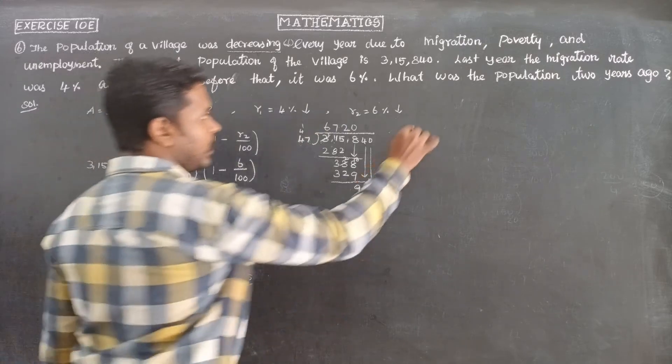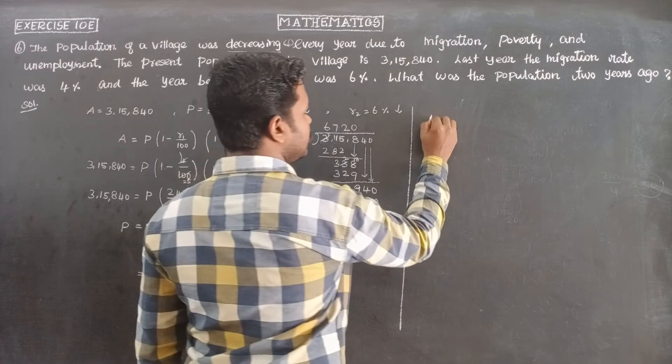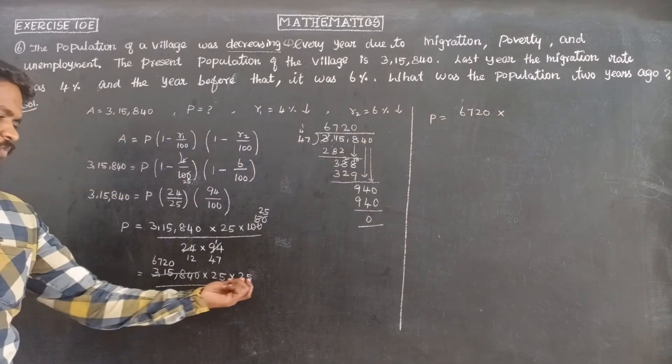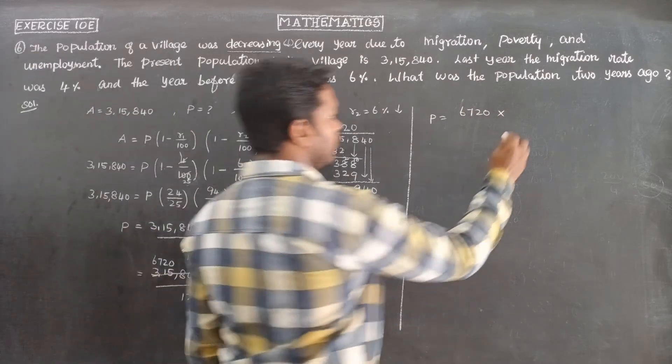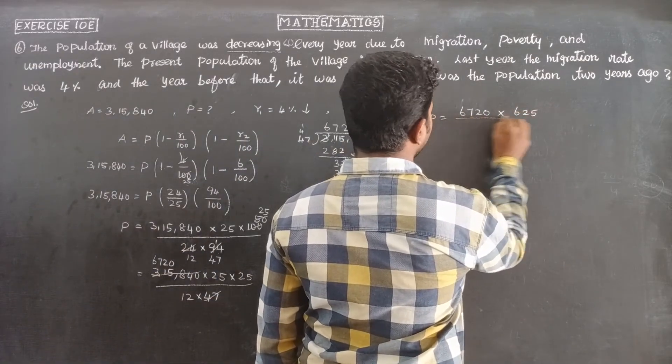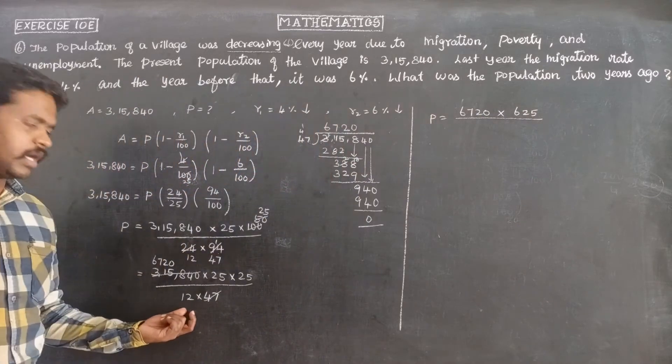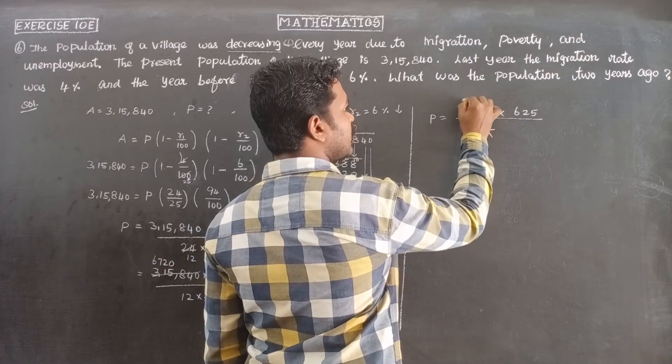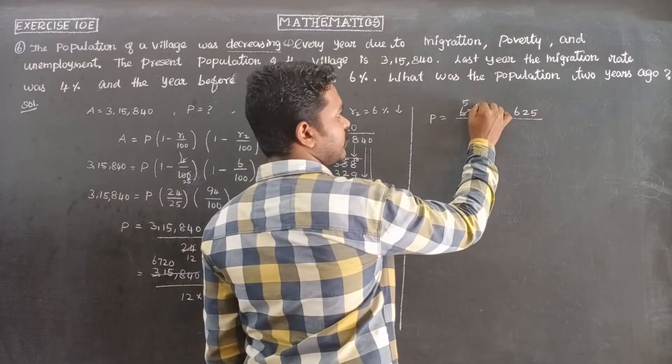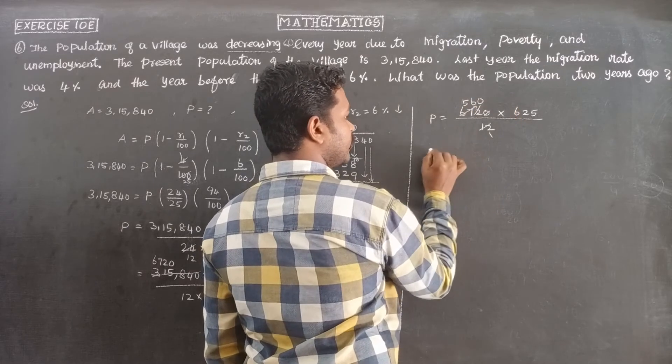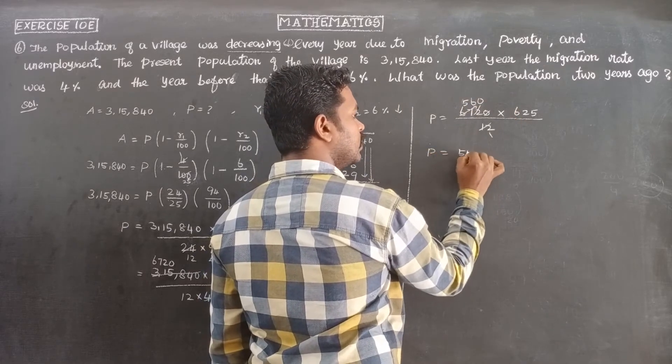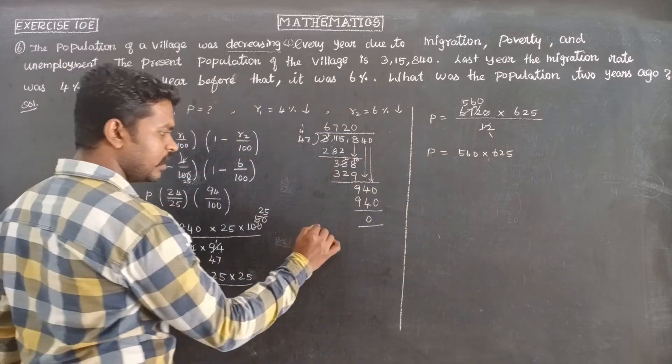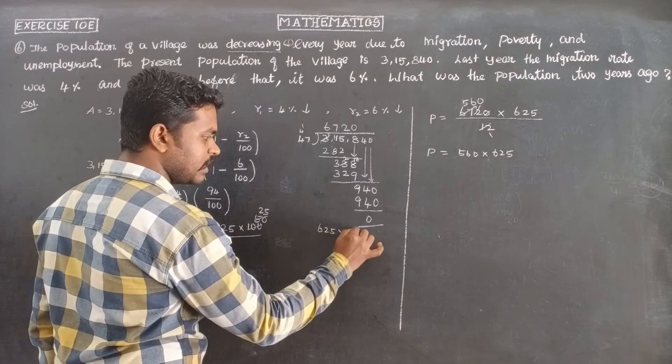So 6,720 again: P equals 6,720 times 625 divided by 12. Simplifying by 12: 1 times 12 is 12, 5 times 12 is 60, remaining gives us 6 times 12 is 72. Therefore P equals 560 times 625.